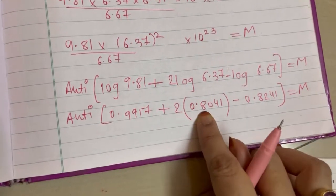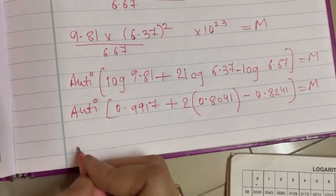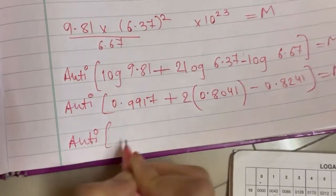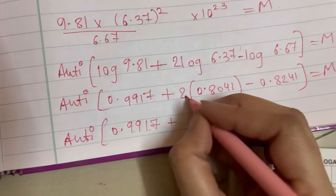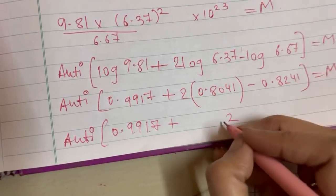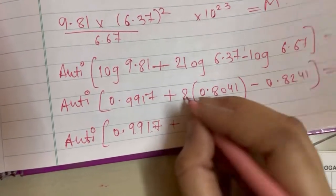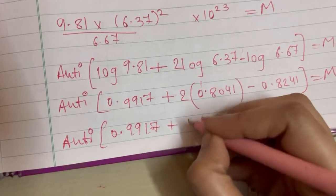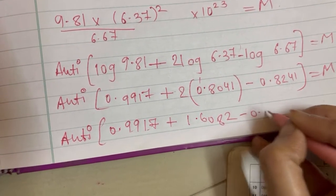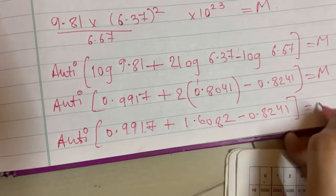Now you multiply 2 with this digit, 0 point 9917 plus 2 ones are 2, 2 fours are 8, 2 zeros are 0, 2 eights are 16, 0 point. 2 zeros are 0 and this 1, minus 0 point.